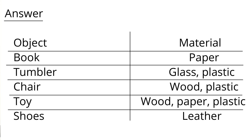The answer is: for book — paper; for tumbler — glass and plastic; for chair — wood, plastic; for toy — wood, paper, plastic; for shoes — leather.